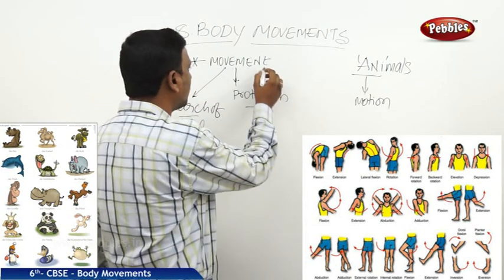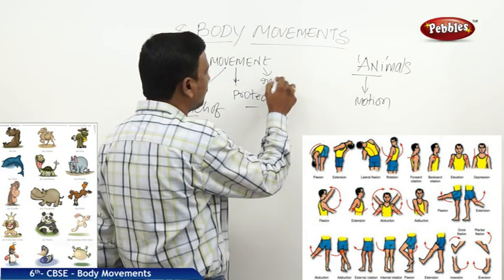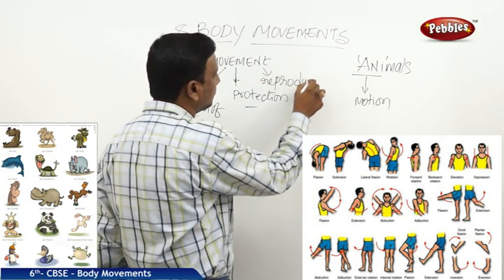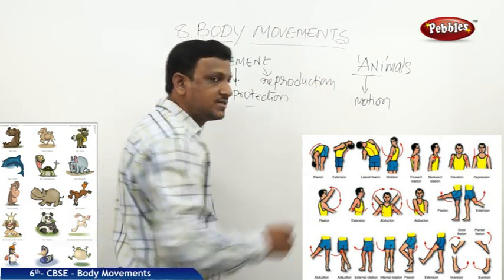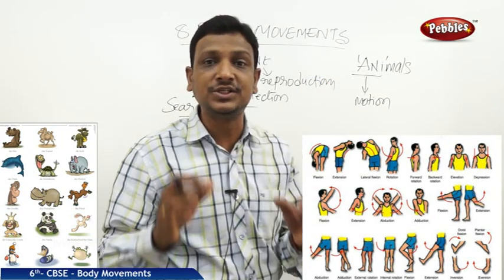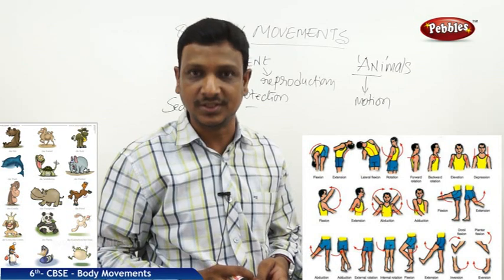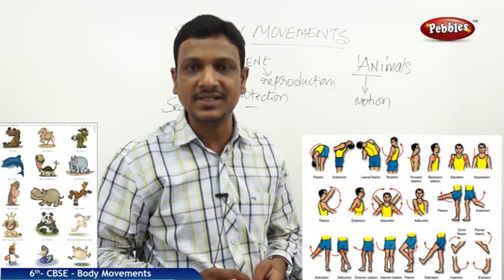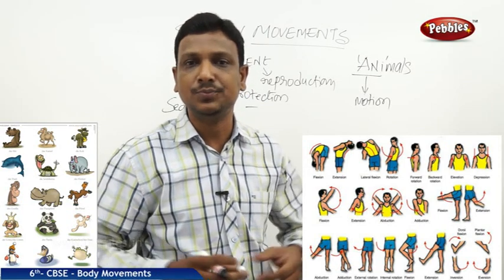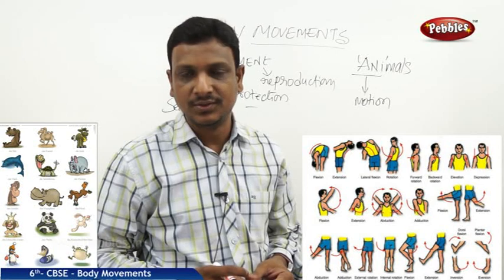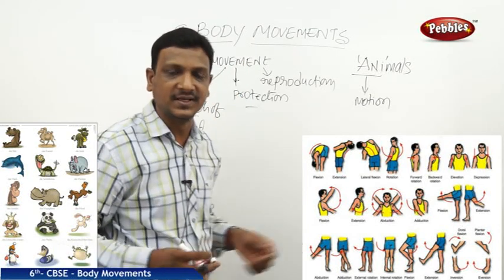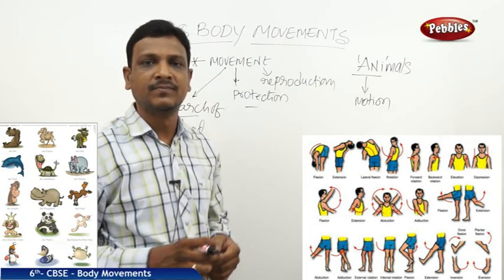The third reason is reproduction. Every organism wants to produce species of its own kind — that is reproduction, producing babies. So for that, animals need to move. That is the necessity of external movements.